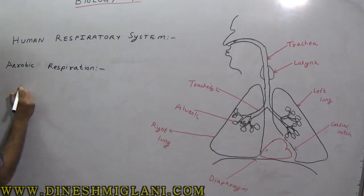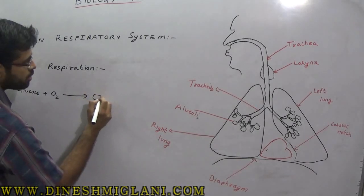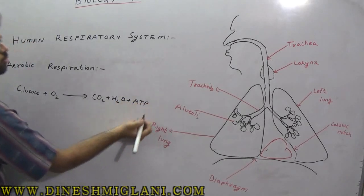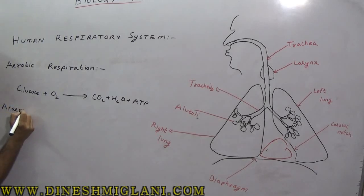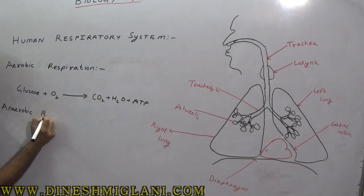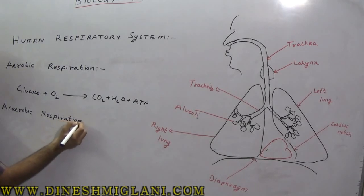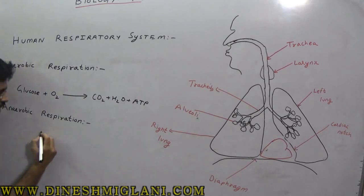In aerobic respiration, glucose is combined with oxygen to produce carbon dioxide, water, and ATP. ATP is the energy molecule of the body. It occurs in the presence of oxygen. After this comes anaerobic respiration.